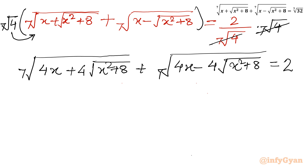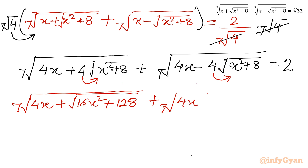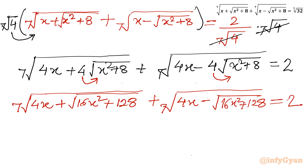The right hand side is now 2. Taking the 4 inside the square root, I can write the 7th root of (4x plus the square root of (16x squared plus 128)) plus the 7th root of (4x minus the square root of (16x squared plus 128)) equals 2. This is our equation for which we will find x, and it is a standard form.